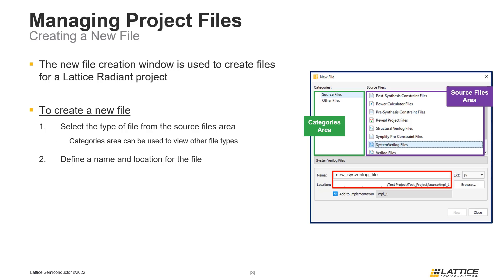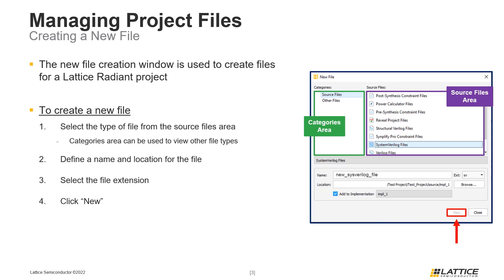By default, new files will be saved to the directory of the current project. Next, the extension for the new file should be selected using the extension drop-down on the right side of the window. Finally, click the New button to finish creating a new file. One important thing to remember before creating the new file is to check the Add to Implementation checkbox. Doing this will add the new file to the selected implementation. If there are multiple implementations in a project, users will be able to select which one to add their new file to.